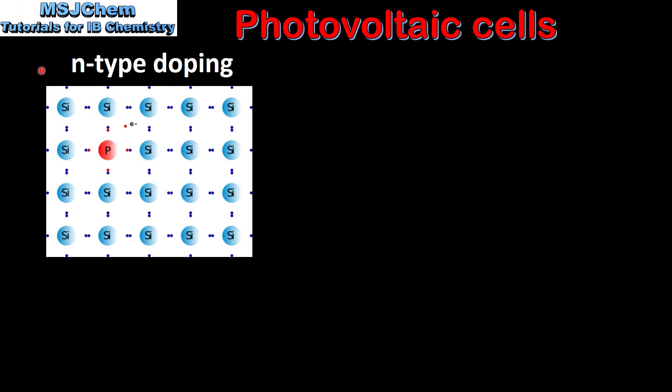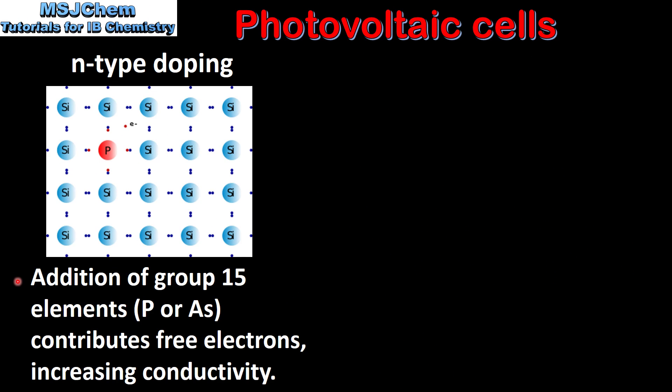Next we look at N-type and P-type doping in more detail. In N-type doping, the addition of group 15 elements, such as phosphorus or arsenic, contributes free electrons, therefore increasing conductivity. Here we can see the lattice of silicon atoms with the addition of a phosphorus atom.